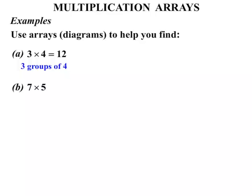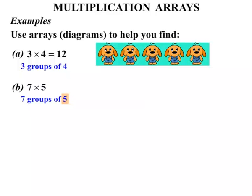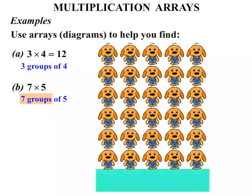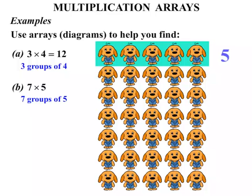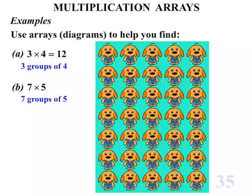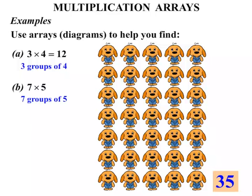Part B: seven times five — seven lots of five. We can think of that as seven groups of five. What about five puppy dogs? One, two, three, four, five — very cute, aren't they? So that's our one group; we want seven groups. One group, two groups, three groups, four groups, five groups, six groups, seven groups. Let's count them in fives: five, ten, fifteen, twenty, twenty-five, thirty, thirty-five. So seven times five, or seven lots of five, equals thirty-five.